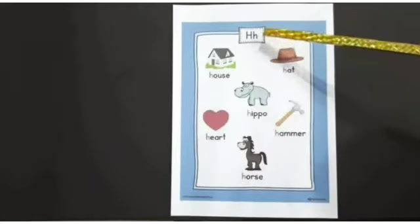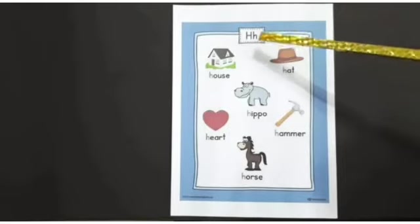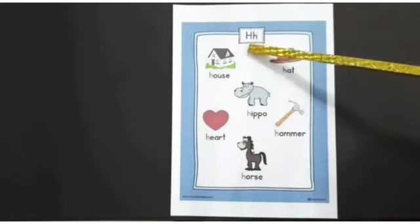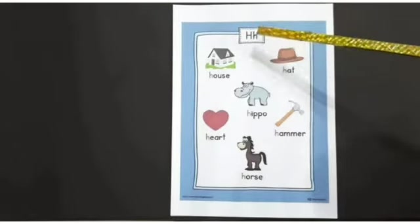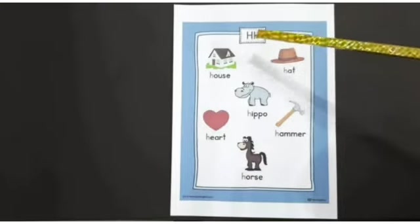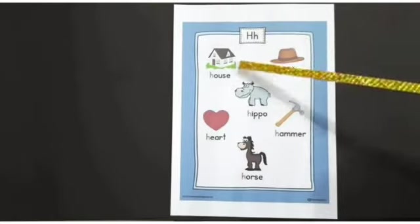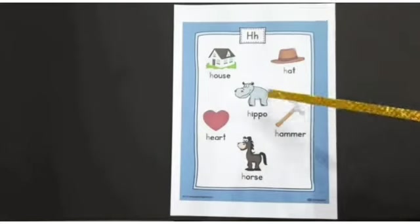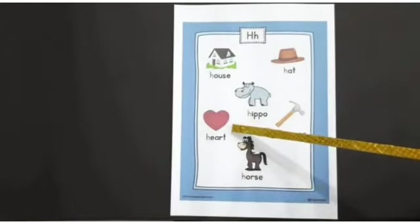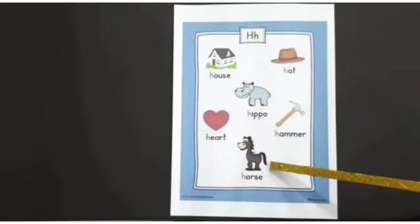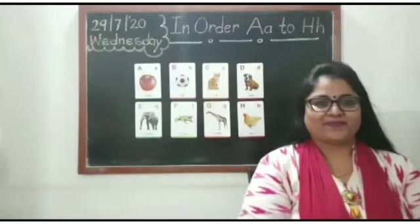This is Alphabet H. Capital H, small h. H says H. H for house, H for hat, H for hippo, H for heart, H for hammer, H for horse.